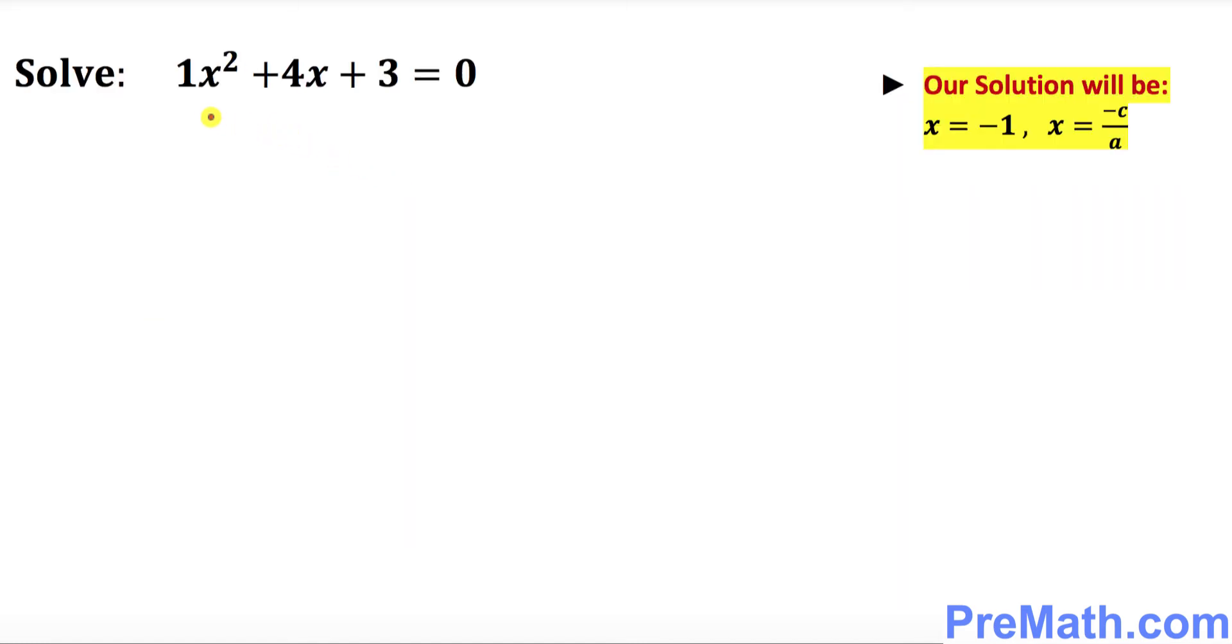Let's look at this next example. Our a is 1, b is positive 4, and c is positive 3. You can see that if you add these two end numbers, first and last, you're going to get the middle number.